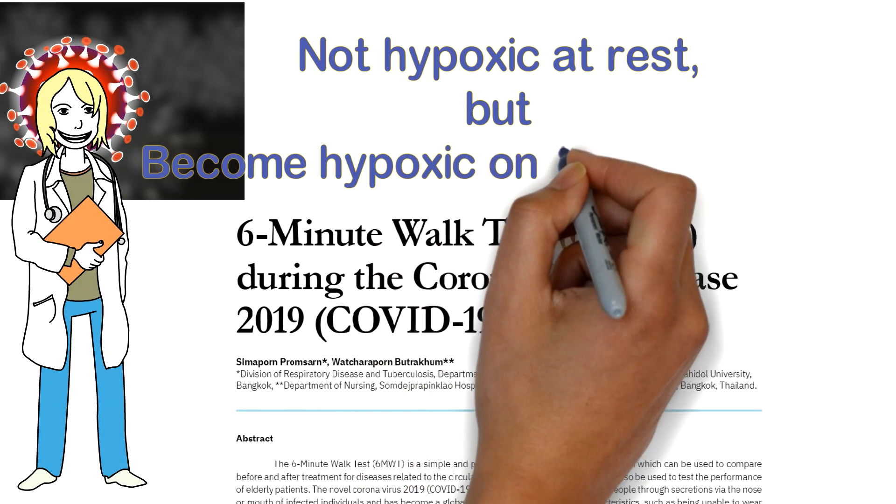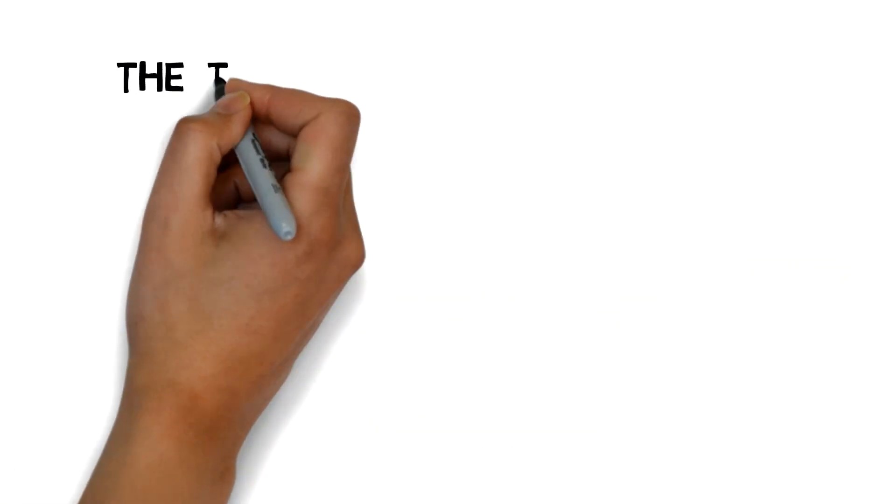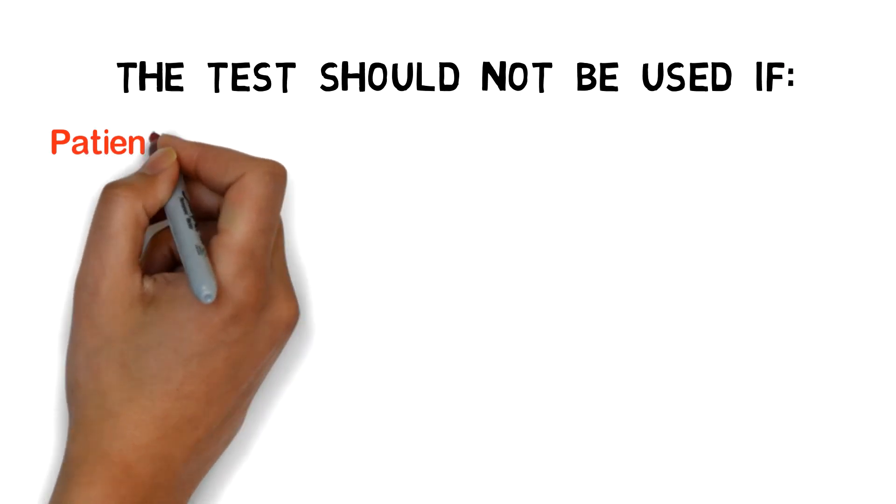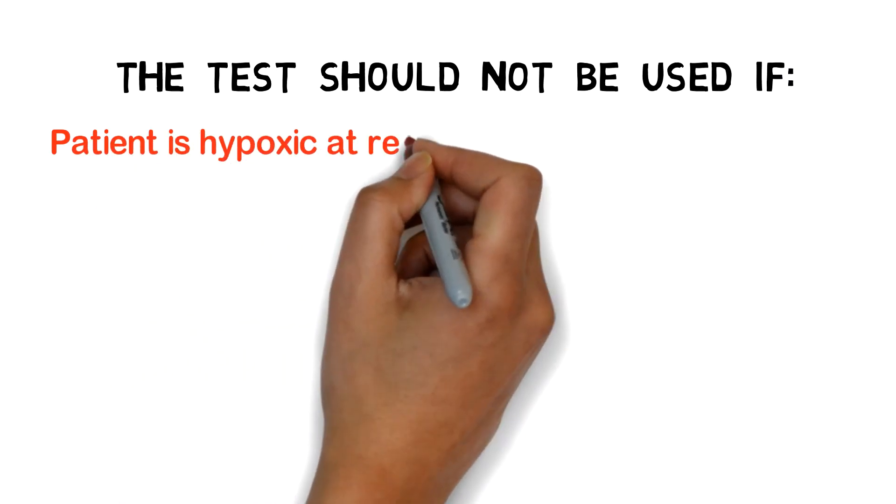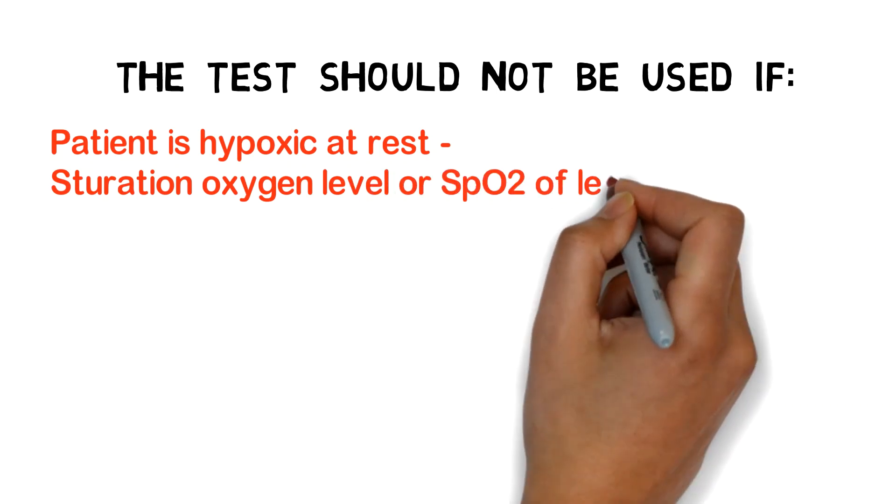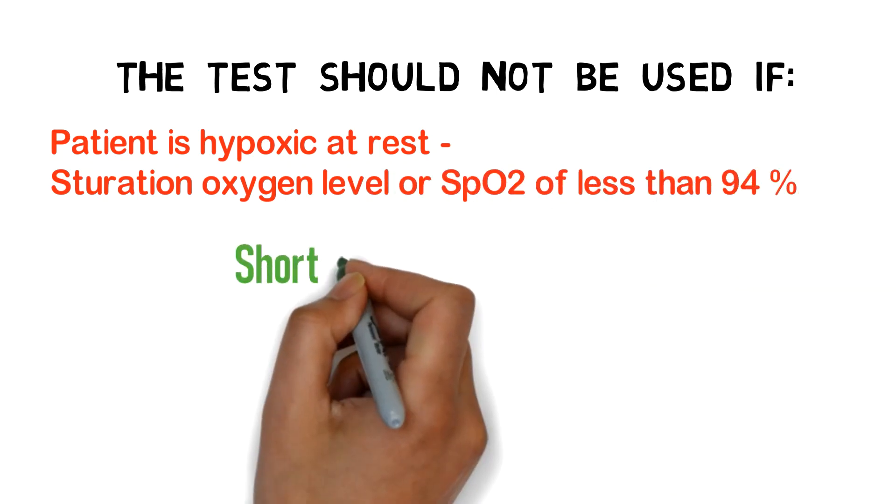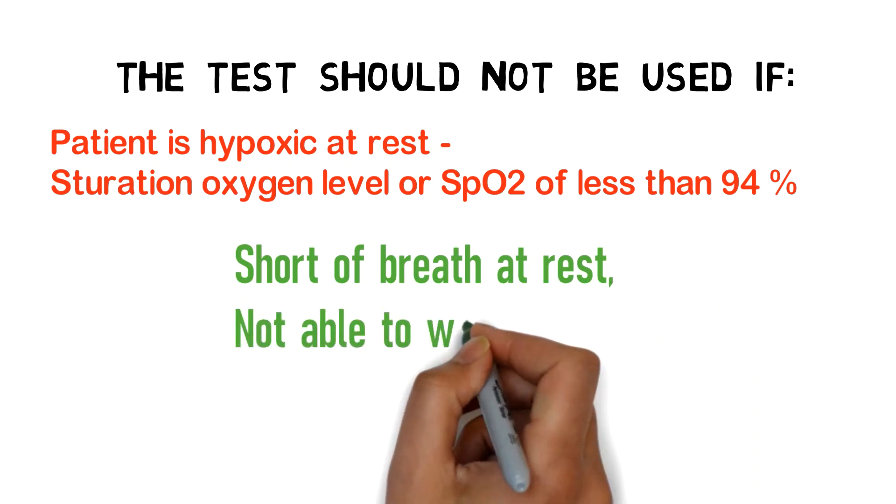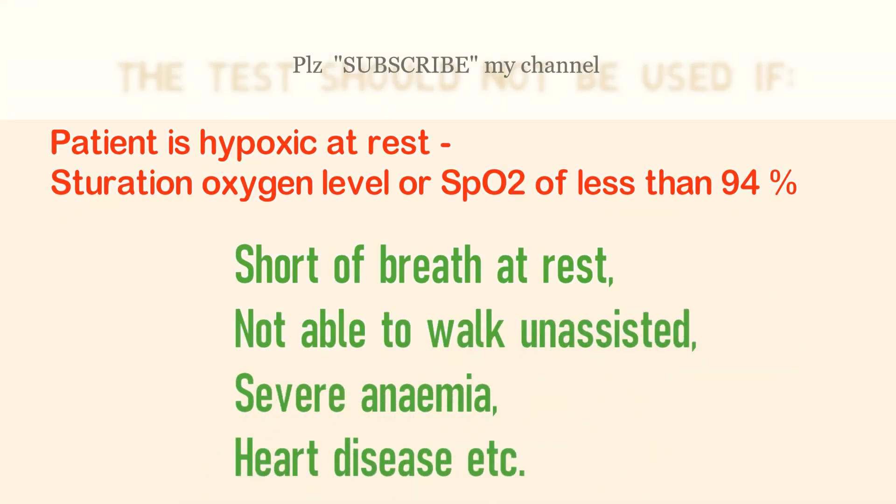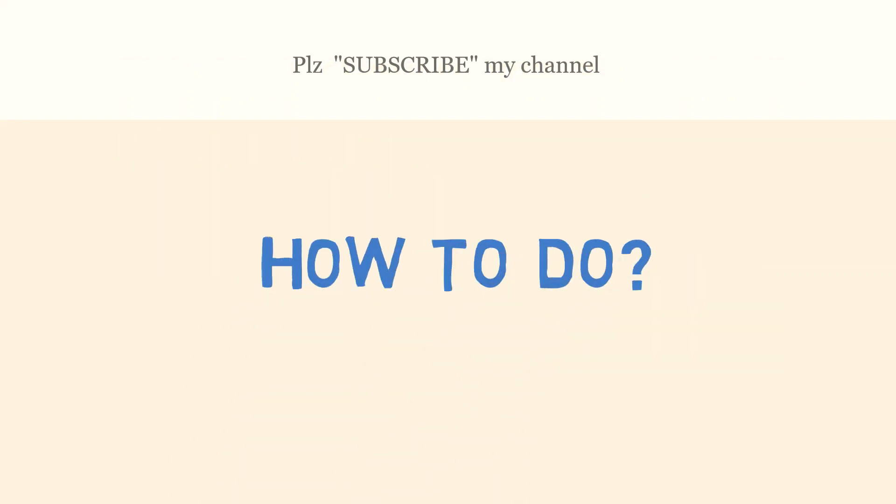The test should not be used if the patient is hypoxic at rest, with oxygen saturation level or SpO2 of less than 94%, short of breath at rest, not able to walk unassisted, has severe anemia, heart disease, etc. How is it to be done?